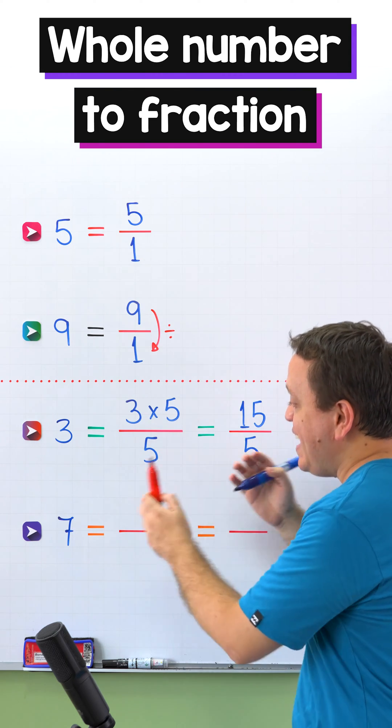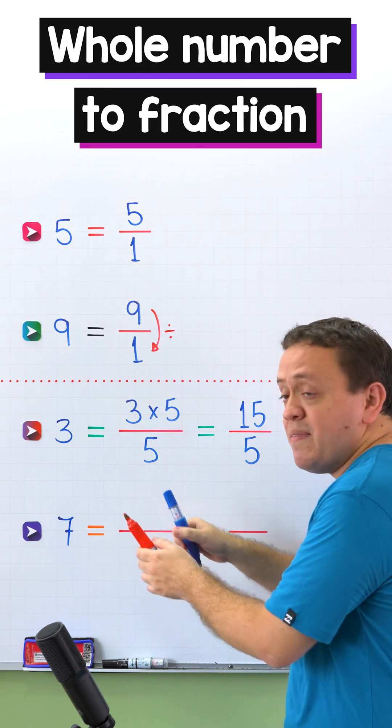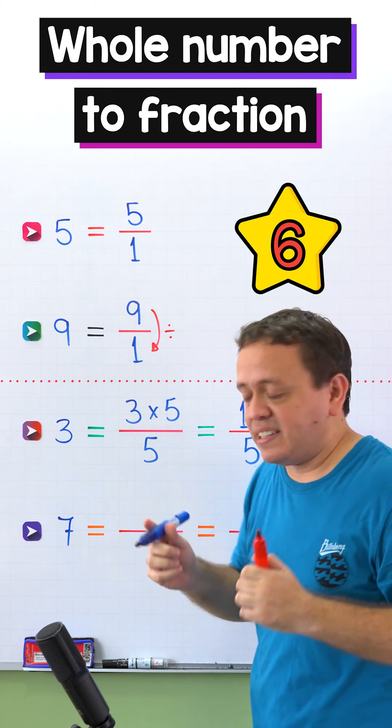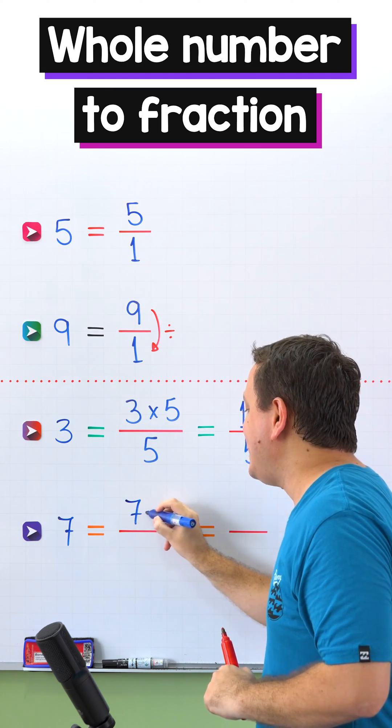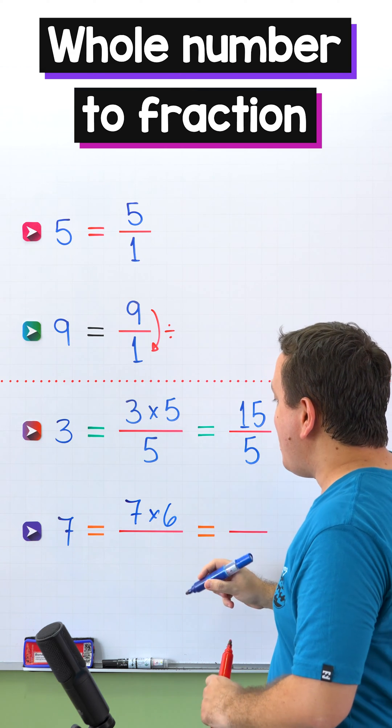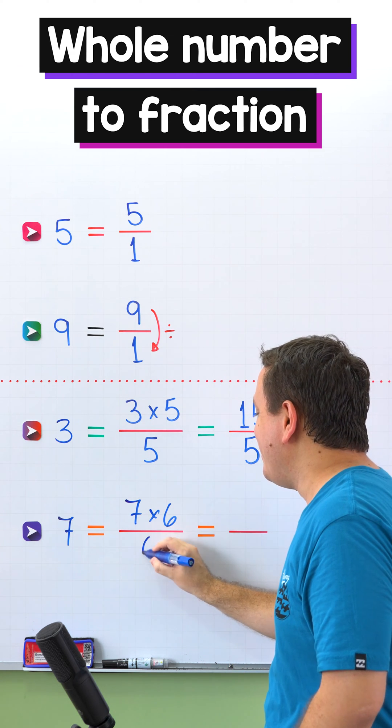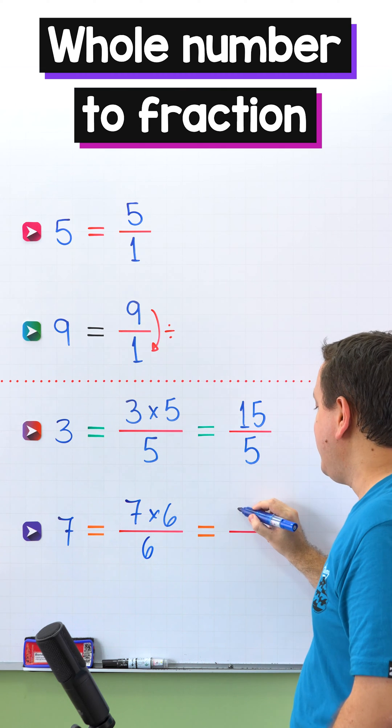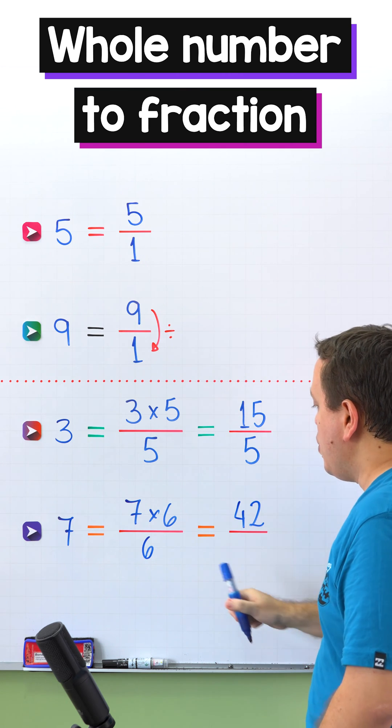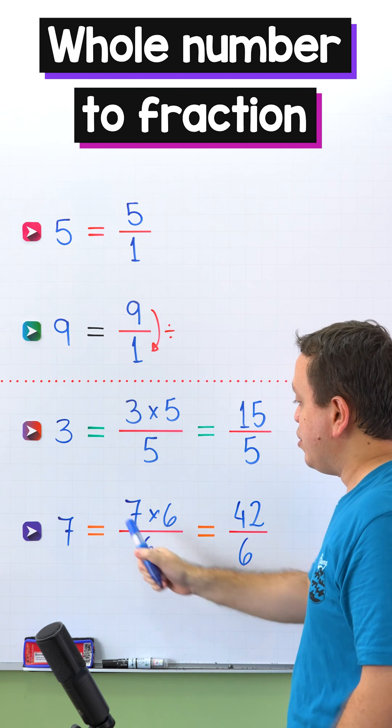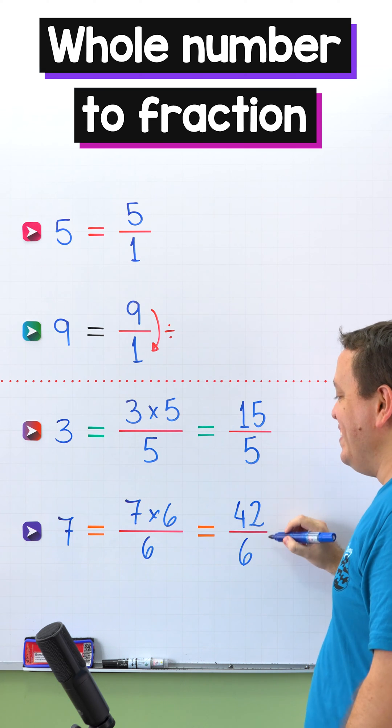Perfect! In the last example, we are going to convert 7 to a fraction with denominator 6. So first, we multiply 7 by 6, and finally we divide this product by 6. 7 times 6 is 42, and then we keep the denominator the same, so 7 is equivalent to 42 sixths.